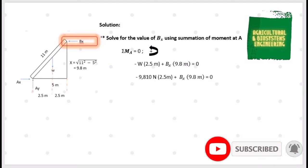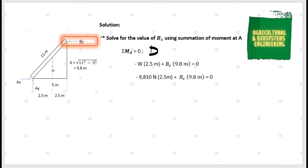We already solved the weight of 9810 N, so we substitute it into the equation: negative 9810 N times 2.5 m, added to Bx times 9.8 m, equals zero. Transposing values, Bx equals 9810 N times 2.5 m all over 9.8 m. Solving gives us a final value for Bx of positive 2502.55 N. The positive value confirms that our assumed direction of Bx going to the left is correct.